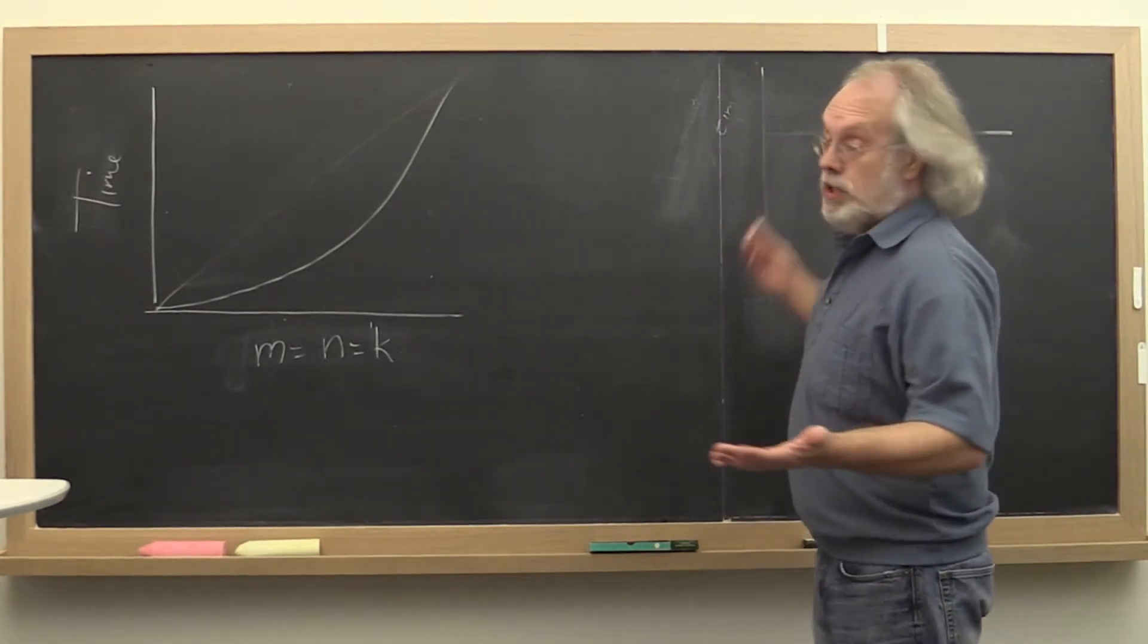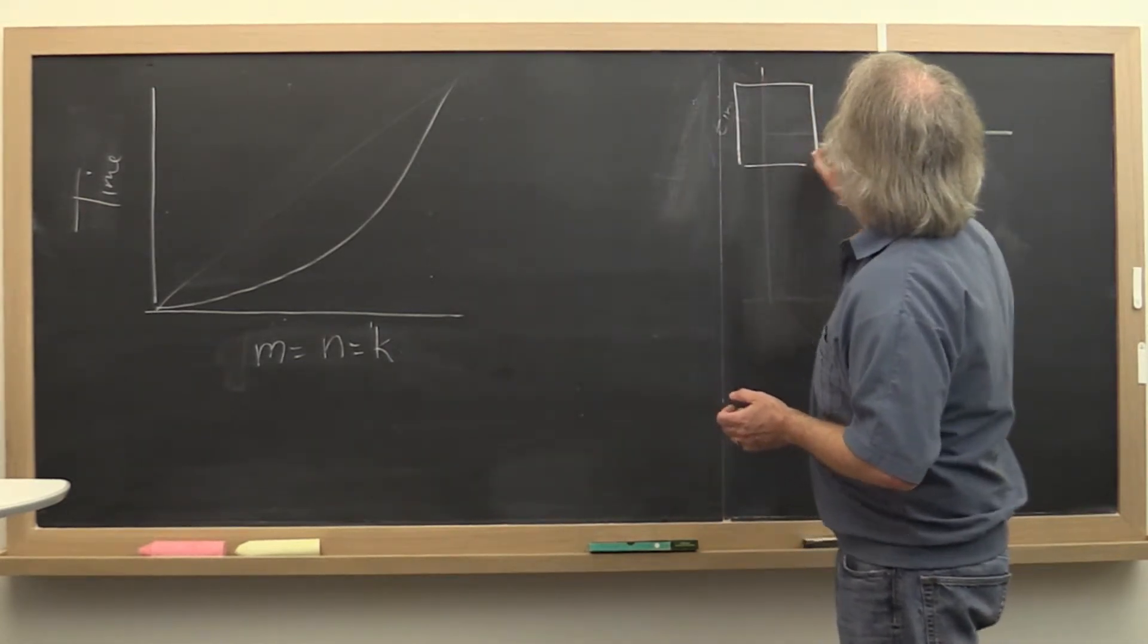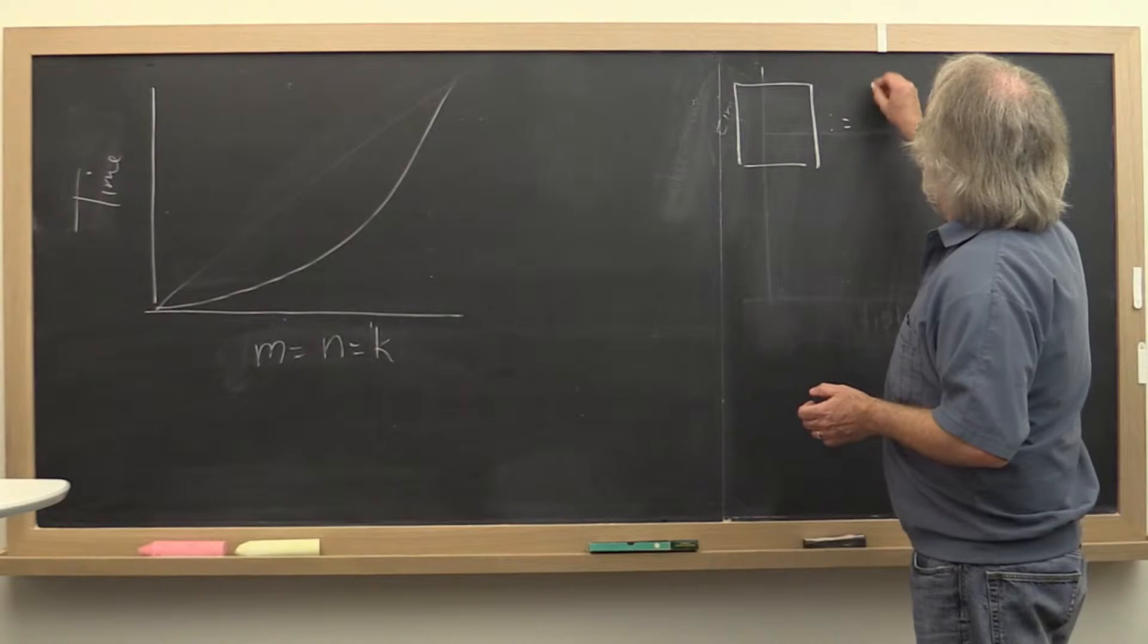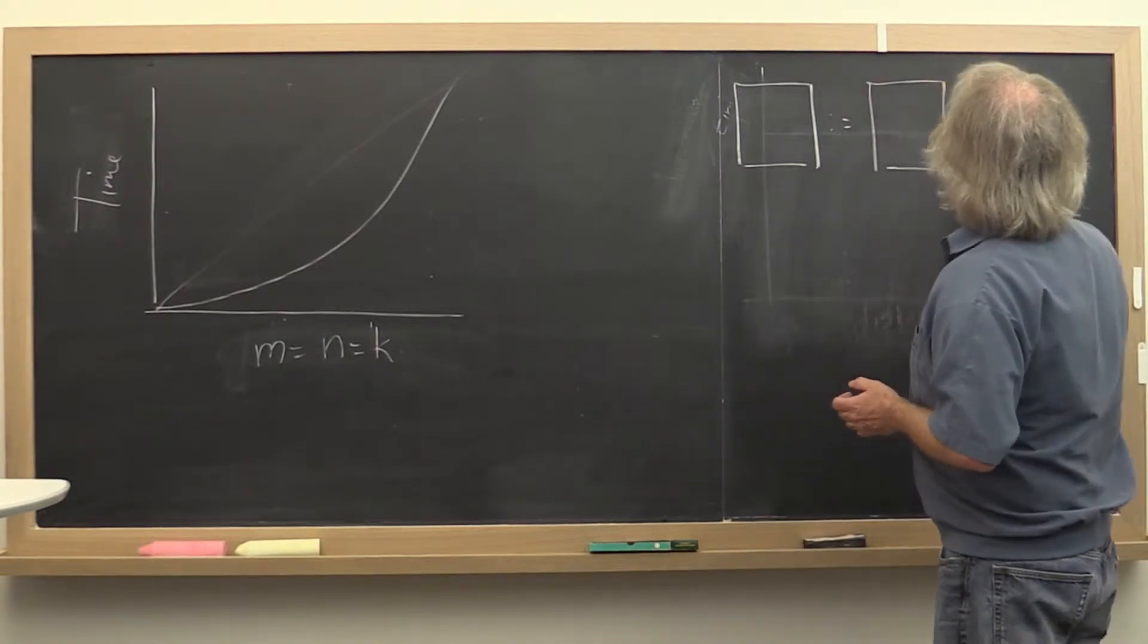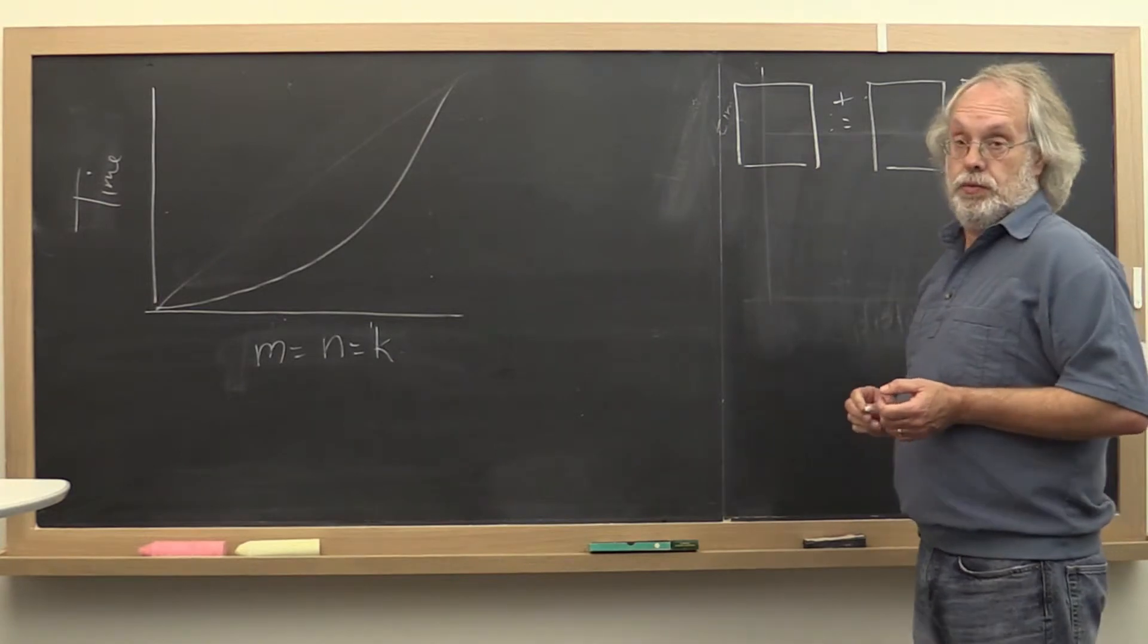And how can we explain this? Well, we know that we're doing a matrix-matrix multiply. So we're taking a matrix C and we're updating it by doing A times B, and we're adding the result of that to the original matrix.